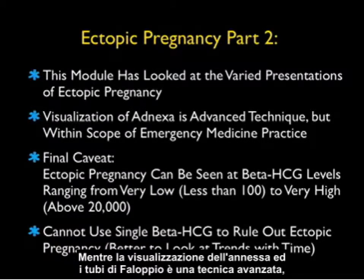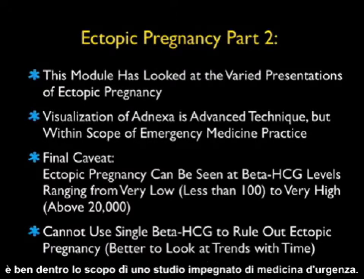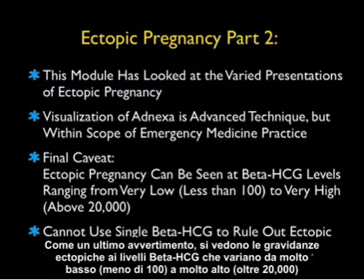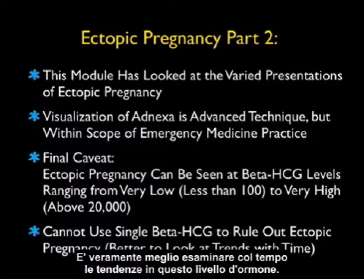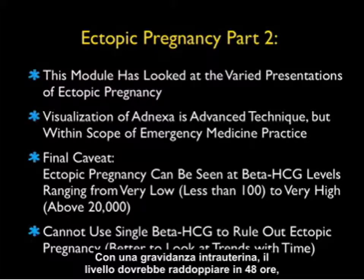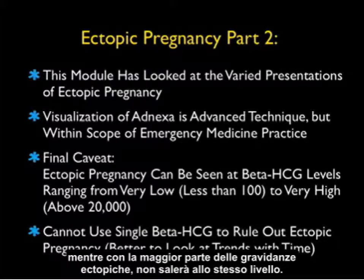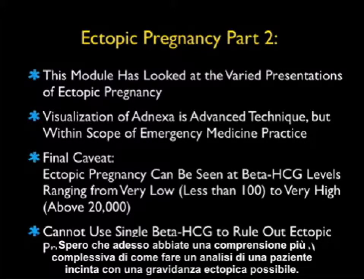While visualization of the adnexa and fallopian tubes is an advanced technique, it is well within the scope of a busy emergency medicine practice. As a final caveat, ectopic pregnancies can be seen at beta-HCG levels ranging from very low — less than 100 — to very high, above 20,000. We cannot use a single beta-HCG level to rule out ectopic pregnancy; it's better to look at trends over time. With an intrauterine pregnancy the level should double in 48 hours, whereas in most ectopic pregnancies it will not climb to the same degree. I hope you now have a better understanding of how to work up the pregnant patient with a possible ectopic pregnancy.